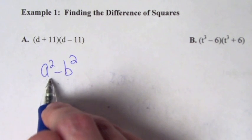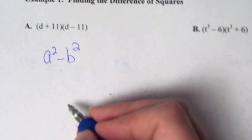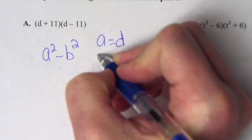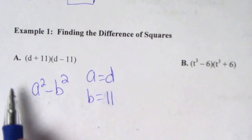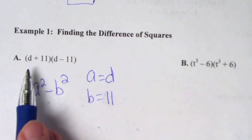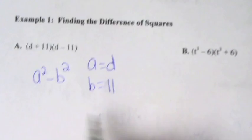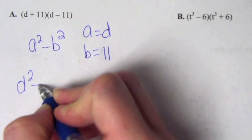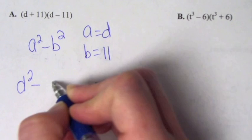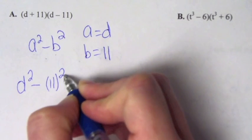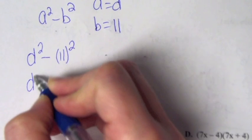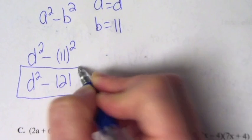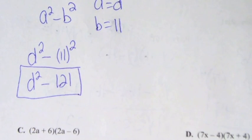So we pick out what a and b are and use the formula a squared minus b squared. If the same terms appear in both binomials and the only difference is one is plus and one is minus, this is the formula to use. Our a is d and our b is 11, so we get d squared minus 11 squared, which equals d squared minus 121.